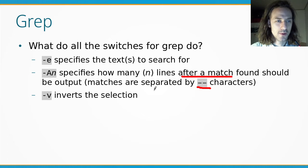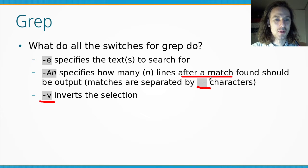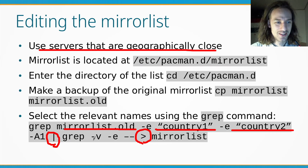That's why we use the second grep command with the -v switch, which inverts the output. If we say -e '--' that would list all lines containing double dashes — those are the separators — but we want everything except the separators. So we use -v -e '--': -v reverses the match, and -e defines the search term.